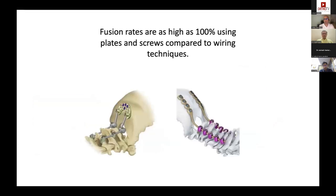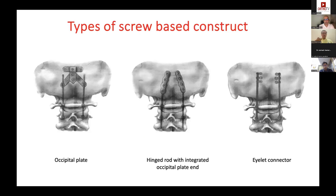Fusion rates are much higher with plate-and-screw systems than wiring, though in pediatric work you may need to rely on wiring with careful attention to fusion mass — fibular graft, calvarial graft, etc. The types of implants include occipital plates, hinged rods integrated with the occipital plate, or plates with eyelets allowing rod placement after bending. That is why cervical screws should be placed first before occipital screws.